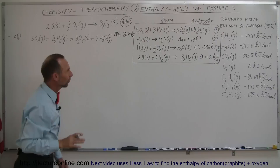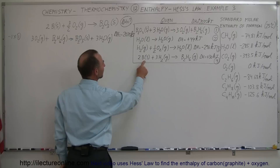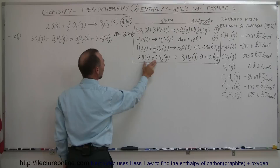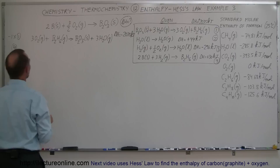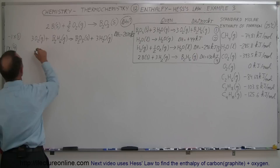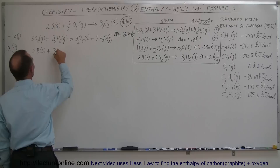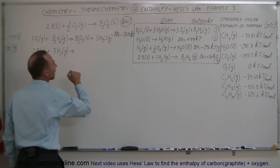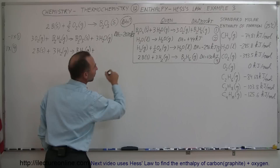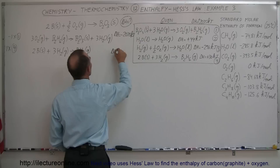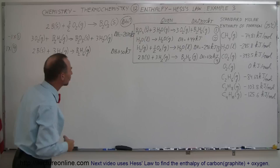Now we want solid boron on the left side, and we have solid boron in equation four — with two moles there matching two moles here — so I don't need to do anything to it. I can just grab equation four and place it directly, so one times equation number four gives us: two moles of solid boron plus three moles of hydrogen gas react to give one mole of diborane, with a delta H of positive 30 kilojoules. That's an endothermic reaction.